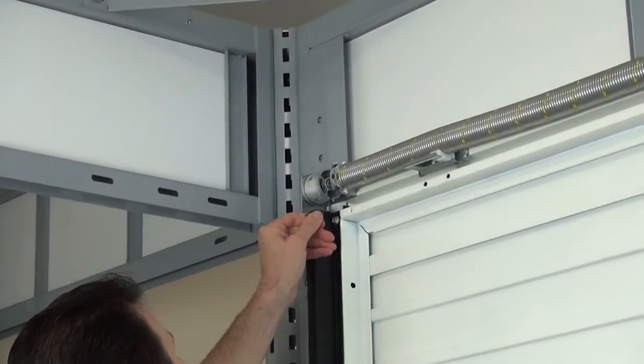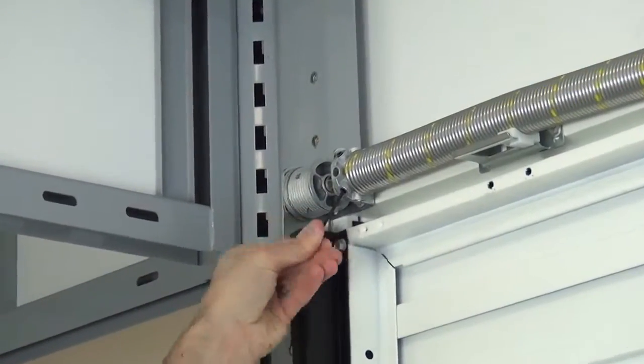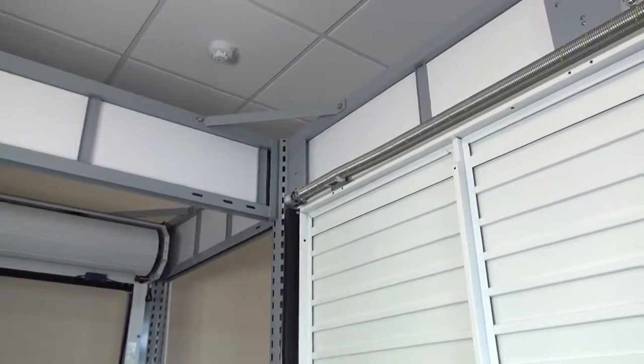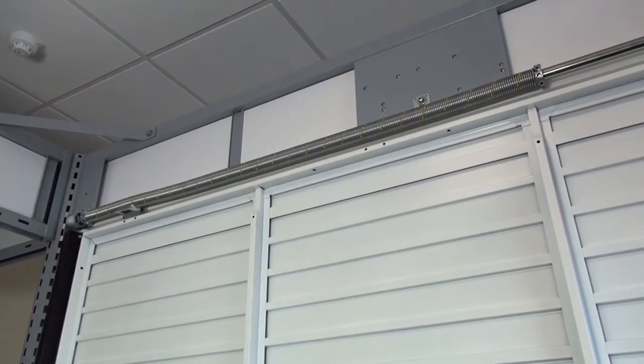Next, lock off the grub screws on the left hand side of the torsion spring. This locks the spring in a safe position to adjust the tension on the spring.